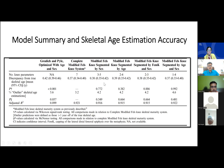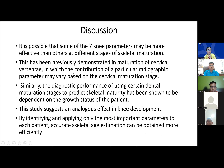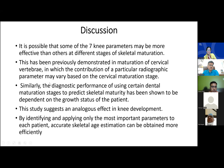The study worked on the possibility that some of the seven knee parameters may be more effective than others at different stages of skeletal maturation. Similar paradigms have been used in assessing maturation of cervical vertebrae and dental maturation stages to predict skeletal maturity. This study suggests an analogous effect in knee development — by identifying only the most important parameters per patient, accurate skeletal age estimation can be obtained more efficiently.